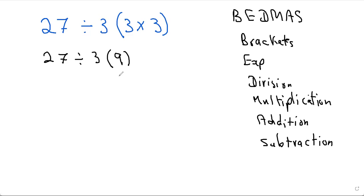Do I go 3 times 9 is 27, 27 divided by 27 gives me 1? Or do I go 27 divided by 3 is 9, 9 times 9 is 81? So these are the two options that a lot of students struggle with. They don't know which is going to give them the right answer.